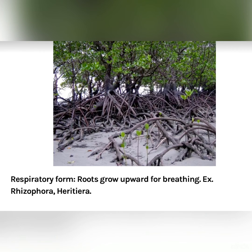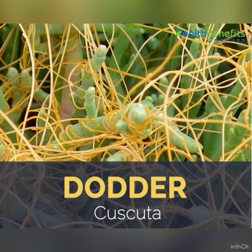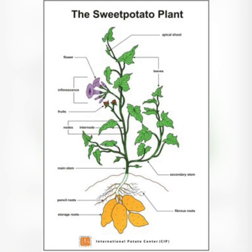In some plants, the roots grow upward for breathing — these are known as respiratory roots, for example in Rhizophora. Climbing roots, or aerial roots, help plants attach to a support. In plants like Pothos, specialized roots develop from the stem to help them absorb water and minerals.